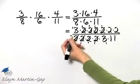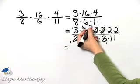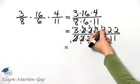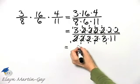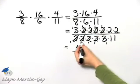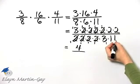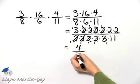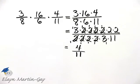So what do we have left? Let's just finish this. One times one times one times one times one times one — we know that's one — times two times two, so that's four, over one times one times one times one times one, times eleven, so that's eleven. And that is my product, and I know it's in simplest form.